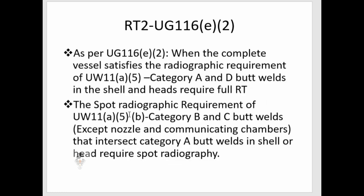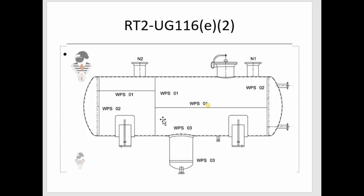The second requirement is the spot radiographic requirement of UW11A5B for Category B and C butt joints that intersect Category A welds in the shell or head. Category B butt joints are the circumferential welded joints in the shell, head, nozzle, or communicating chambers. These Category B butt joints that intersect with Category A joints require spot radiographic examination.